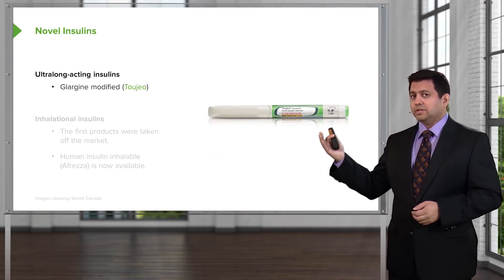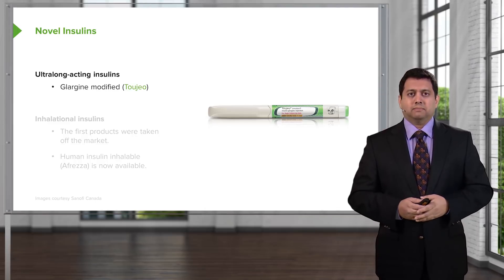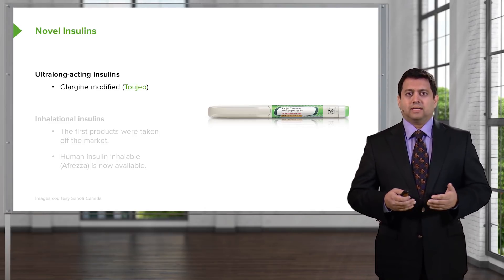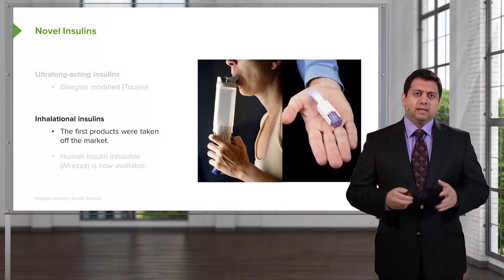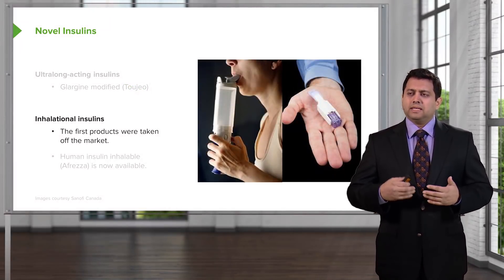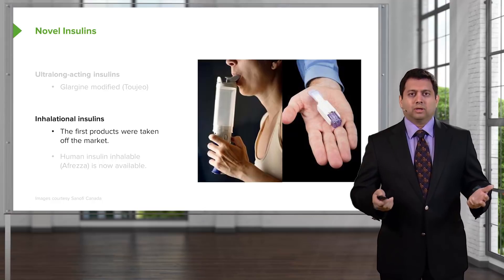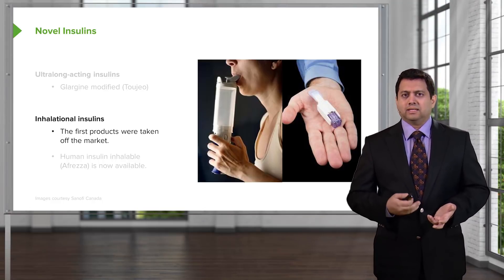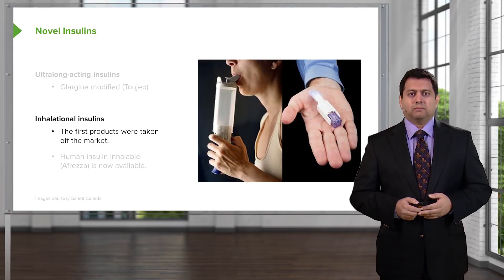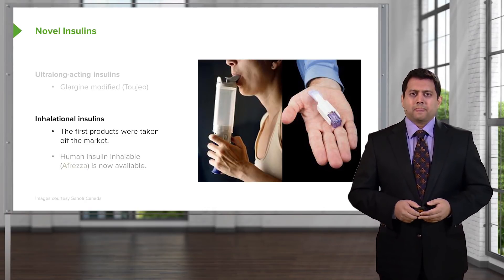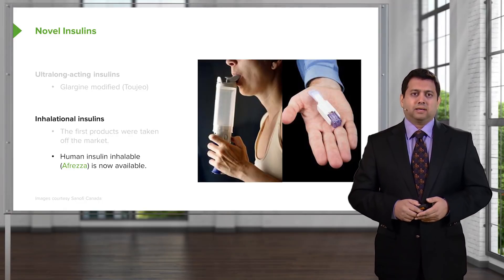We do have some novel insulins out there. The ultra-long-acting insulins have just come onto the market in the last probably 8 months. Glargine modified insulin has a very, very long duration of action, probably around 36 hours. I also want to talk about inhalational insulins. The very first products were very unsuccessful — the first puffer was really more like a huge beer can than a puffer. It was quite inconvenient, with the spacer built into the device, and it ended up getting pulled off the market. There are new insulins out there that are much smaller and perhaps a little bit more palatable, and we'll see if they pick up and take off.